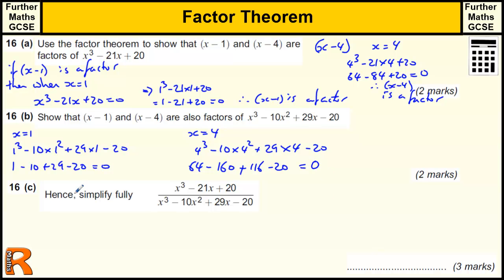So now we've got to, using that information, simplify this fully. So we know that these are both factors of this top part of the fraction, and these are both factors of the bottom part of this fraction, and they're going to cancel. So all we need to do really is to figure out what the third factor is, what makes the rest of it. So if we've got x minus 1 and x minus 4, and multiply that out, we get x squared minus x minus 4x, which is minus 5x, plus 4.